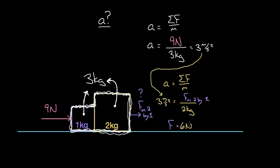So the force is six newtons, not nine — and this isn't surprising. It takes more force to accelerate the entire three kilogram system than to just accelerate the two kilogram mass. To find that internal force, we could not treat the entire system as a single mass. Recapping: if the question does not depend on the internal structure, you can simplify by treating the system as a single object. But if the question does depend on the internal structure, you cannot treat the system as a single object — you must focus on the internal structure.